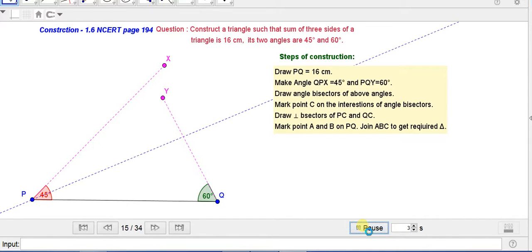Now, we will draw the angle bisector of P and angle bisector of Q. It is meeting. These are meeting at C. Then, draw the perpendicular bisector of CP and CQ. The intersecting points on PQ are A and B of this perpendicular bisector. We will join AC, BC and AB. This is our required triangle.